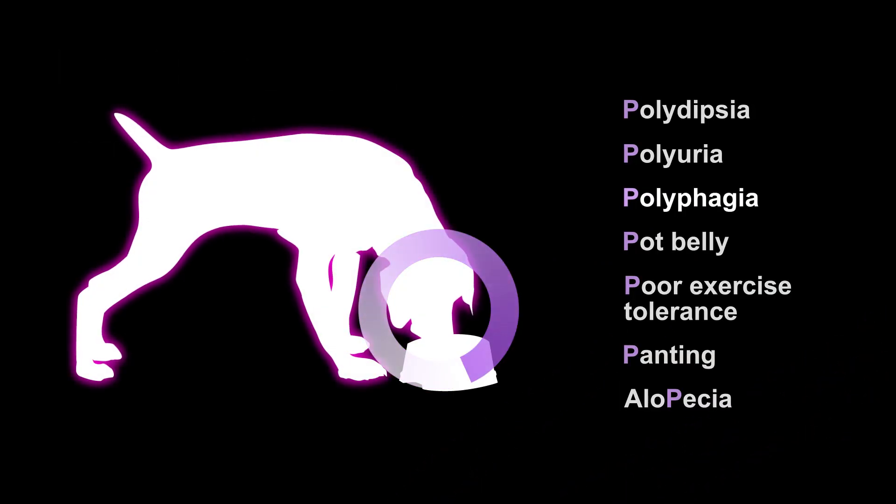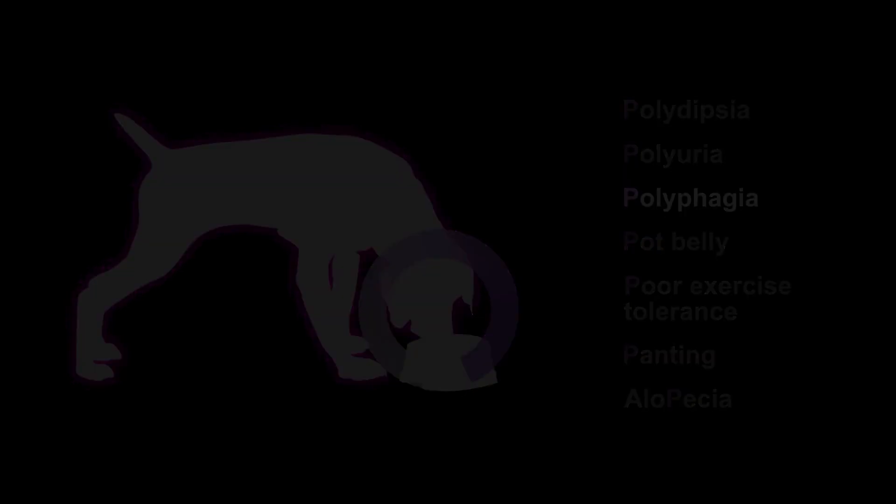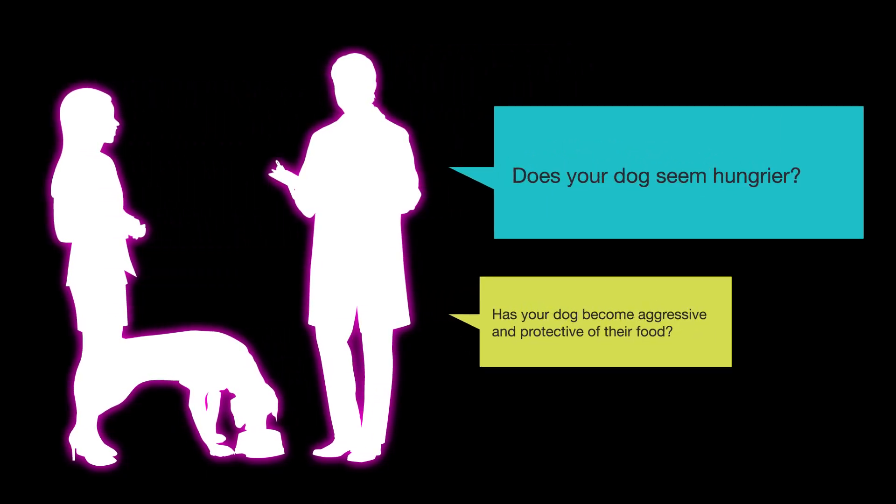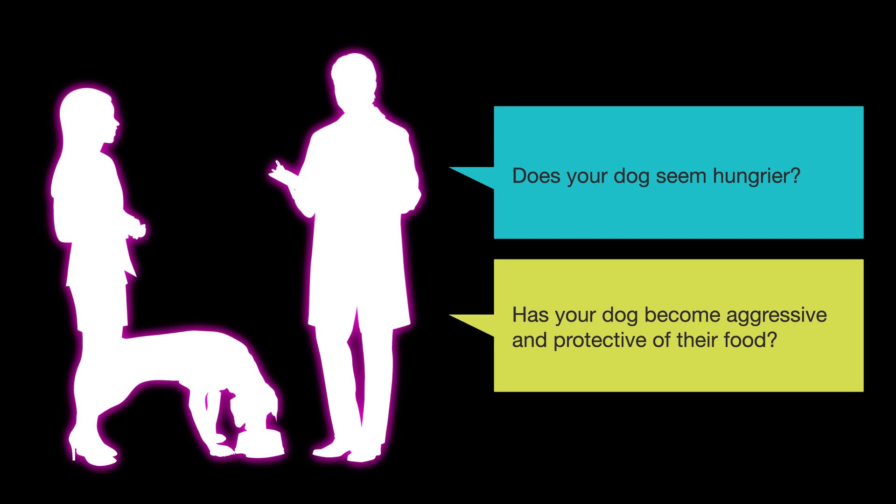Another sign of Cushing's disease is polyphagia. Similarly to PUPD, owners may not see this as an immediate issue. Again, it is useful to talk about behaviors which suggest an increased appetite.